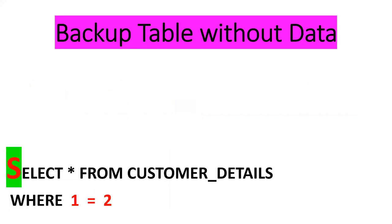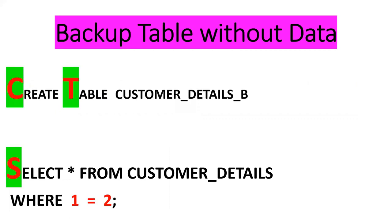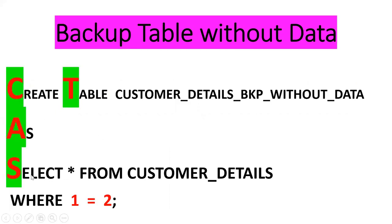I am putting one condition: WHERE 1 = 2. This is a false condition. When I put a false condition, it won't return any data. So it gives no data. When I query this, I get only the definition. So on top of that, we create table: CREATE TABLE customer_details_backup_without_data AS SELECT * FROM customer_details WHERE 1 = 2. Since 1 = 2 is a false condition, it won't return any records — only the definition will be copied.